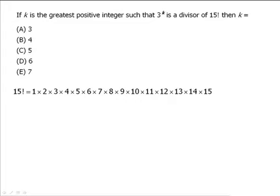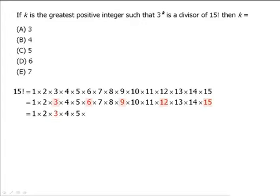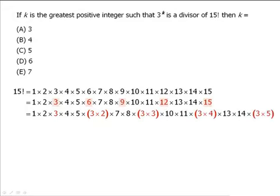Now notice that we have several 3's hiding among the numbers I've highlighted here. What I mean by that is we can take 6 for example and rewrite it as 3 times 2. We can take 9 and rewrite it as 3 times 3, 12 as 3 times 4, and 15 as 3 times 5.